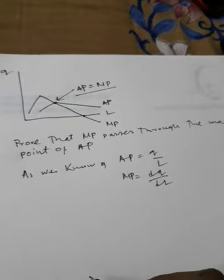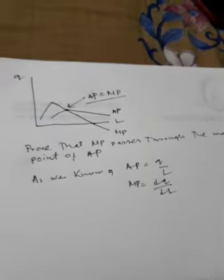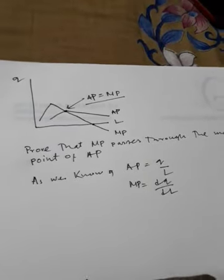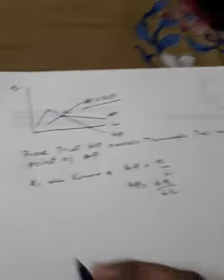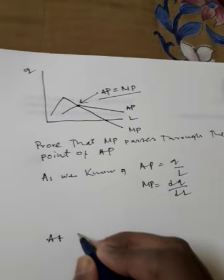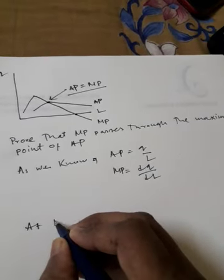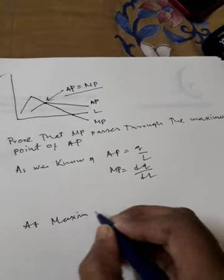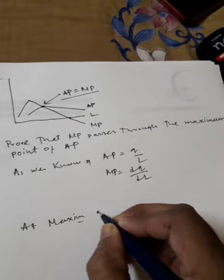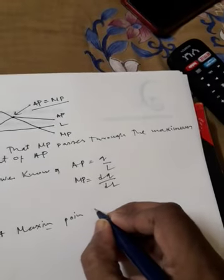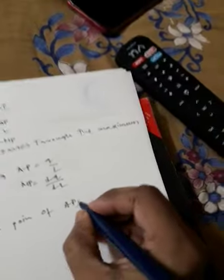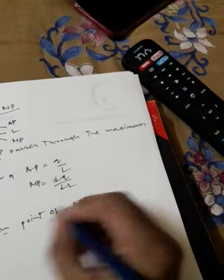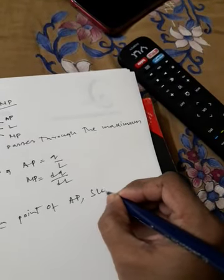We have to solve the total output. The total output is MP, so the total output at the maximum point of AP is equal to 0. We have to solve the maximum point of AP. The slope of AP is equal to 0.